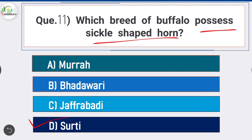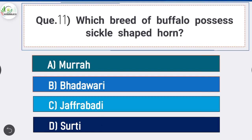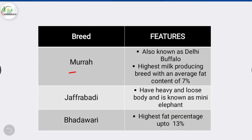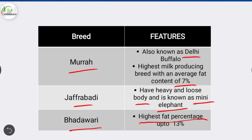Question number eleven: which breed of buffalo possesses a sickle-shaped horn? The answer is option D - Surti. Surti is the breed of buffalo which possesses a sickle-shaped horn. Murrah is a breed of buffalo also known as the belly buffalo, with the highest milk producing capacity and an average fat content of 7 percent. Surti/Jafarabadi is a breed of buffalo with a heavy and loose body, known as the mini elephant, with the highest fat percentage of up to 13 percent.